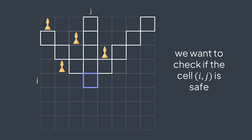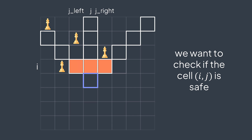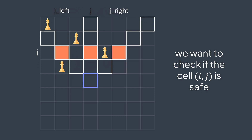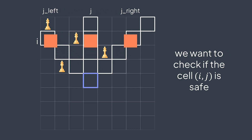To traverse them, we go through rows backwards starting from i. For each row we check the cell of the left diagonal, the cell of the column, and the cell of the right diagonal. We use two variables, j_left and j_right, both starting at j. Each time we decrement i, we also decrement j_left and increment j_right — because the left diagonal goes left and the right diagonal goes right. We then check those three cells and continue.